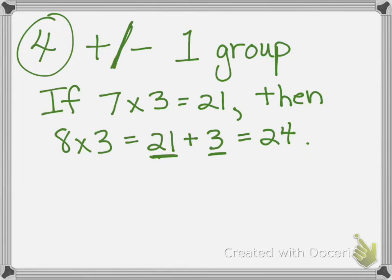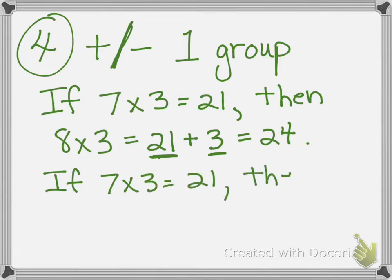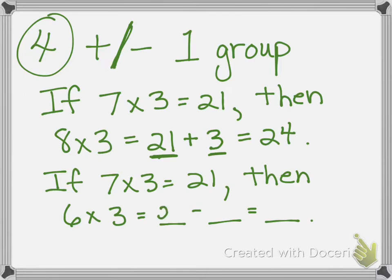Now we're going to do a subtraction one. If seven times three equals 21, then we're going to take away a group: six times three equals. Finish writing out that sentence and see if you can figure out what numbers to write in. Pause until you're all done. Seven times three is 21 — now we take away a group of three: 21 take away three is 18. Six times three is 18, and that's something we know to be true. Give yourself a check mark if you got that right.